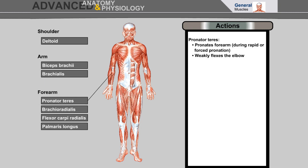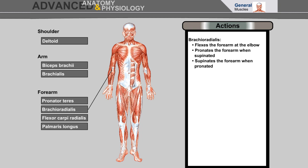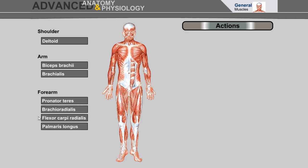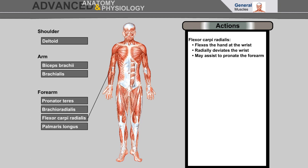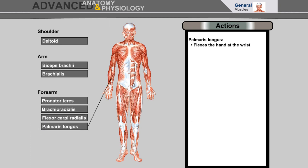Pronator teres pronates the forearm and weakly flexes the elbow. Brachioradialis flexes the forearm at the elbow, pronates the forearm when supinated, and supinates the forearm when pronated. Flexor carpi radialis flexes the hand at the wrist, radially deviates the wrist, and may assist to pronate the forearm. Palmaris longus flexes the hand at the wrist.